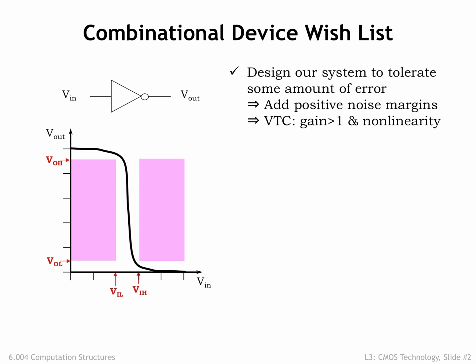The VTC shown here is that for a combinational device that serves as an inverter. If we're fortunate to be using a circuit technology that provides high gain and has output voltages close to ground and the power supply voltage, we can push VOL and VOH outwards towards the power supply rails, and push VIL and VIH inward, with the happy consequence of increasing the noise margins — always a good thing!